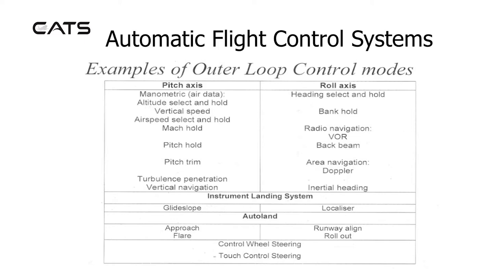In the roll axis: heading select and hold, bank hold, radio navigation, VORs, area navigation, and inertial headings. The instrument landing system has in the pitch axis glide slope and in the roll axis the localiser. For auto land, in the pitch axis approach and flare, and for the roll axis runway align and roll out. There is also control wheel steering and touch control steering.